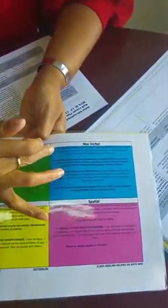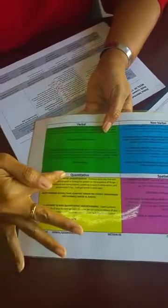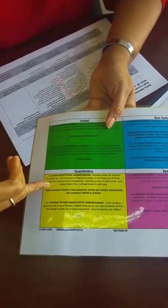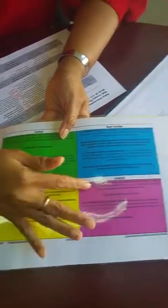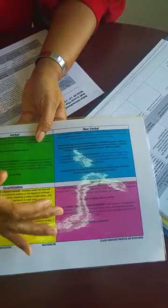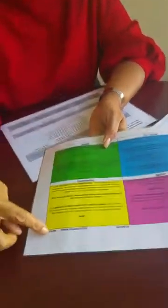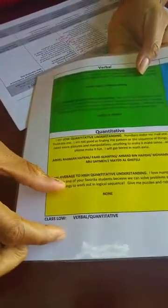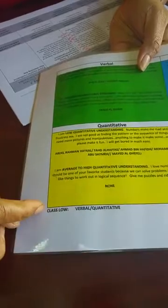This data that everyone should have in their classroom really breaks down verbal — who's low and who's high — nonverbal, who's low and who's high, your quantitative, once again who's low and who's high, and our spatial, low and then high. If you also notice, we also have our class low, so we know what our class struggles with. This class, which is Section 7D, struggles with verbal and quantitative.